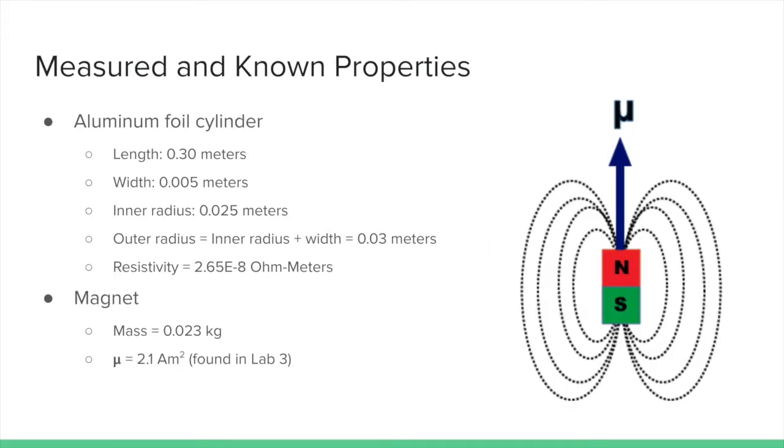The measured and known properties are as follows. The aluminum foil cylinder has a length of 0.3 meters, a width of 0.005 meters, an inner radius of 0.025 meters, hence an outer radius of 0.03 meters, and a resistivity of 2.65E-8 ohm-meters.